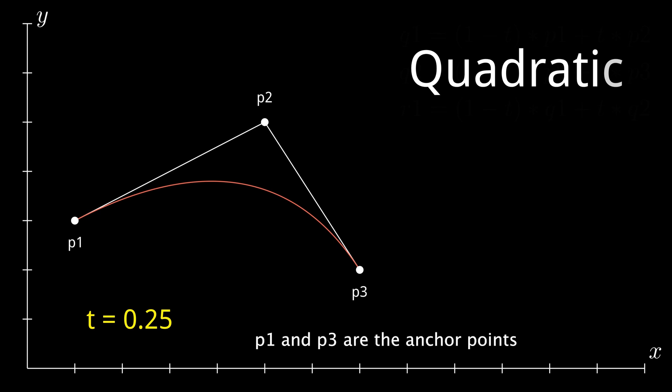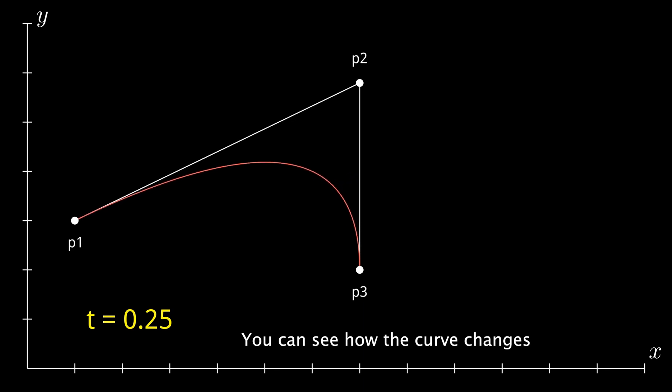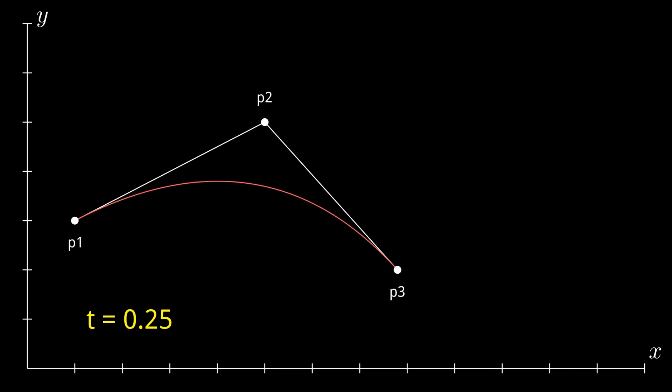P1 and P3 are the anchor points and P2 is a control point. You can see how the curve changes if you move the points. This is starting to look more familiar now, but it's still not the same Bezier curve you are used to. That comes another step down.